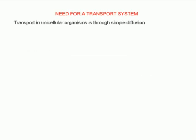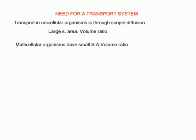Single-cell animals, for example amoeba and tapeworm, carry out the exchange of gases and nutrients through the entire body surface by simple diffusion. This is because unicellular organisms have a large surface area to volume ratio. On the other hand, multicellular organisms like mammals have a small surface area to volume ratio, and most of their cells are far from the external surface. These cells cannot obtain all body requirements by diffusion alone, which is often a slow process.